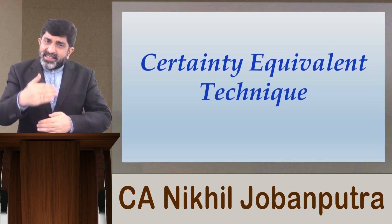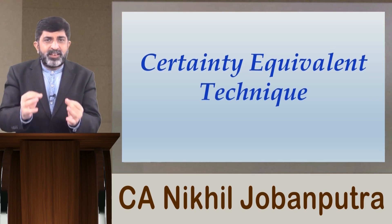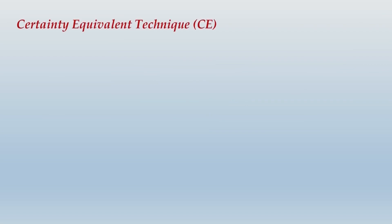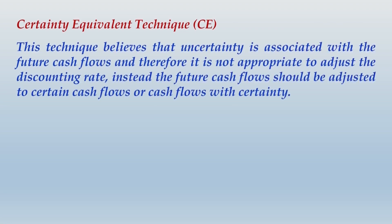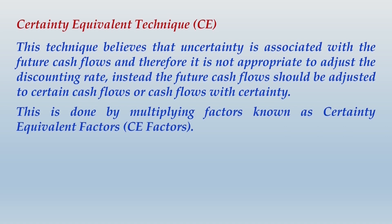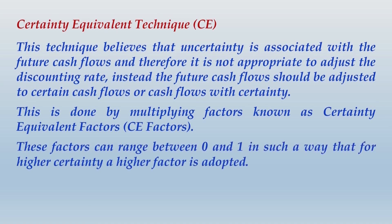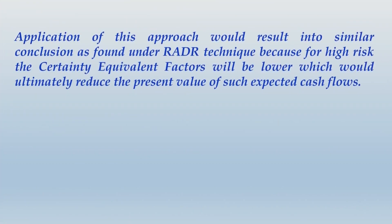Under the certainty equivalent technique, if risk is involved in future cash flow amounts, you must adjust the risk with the future cash flows instead of adjusting the discounting rate. This technique believes that uncertainty is associated with future cash flows and therefore it is not appropriate to adjust the discounting rate. Instead, future cash flows should be adjusted to certainty equivalent cash flows by multiplying certainty equivalent factors, which range between zero and one.